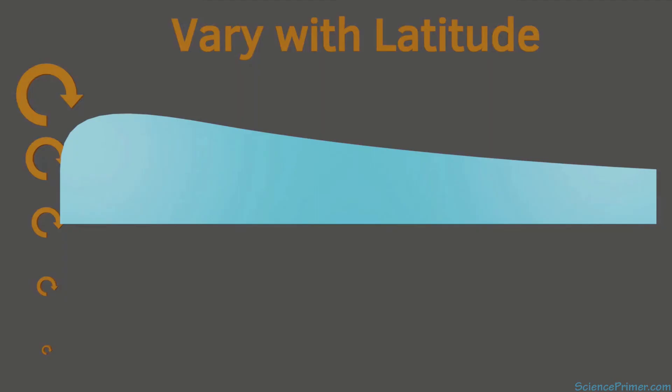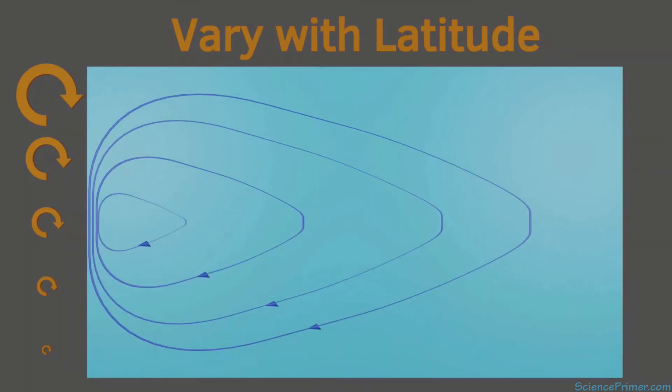So through this set of simple models, Stommel was able to show that the feature of the real world that caused western boundary intensification was the fact that Coriolis effect varies with latitude.